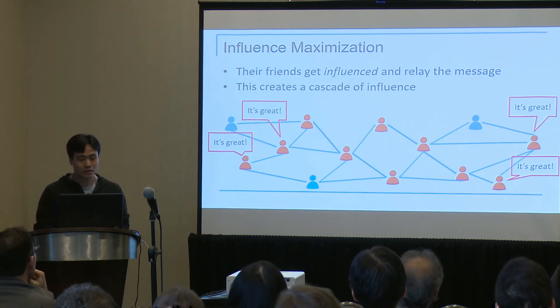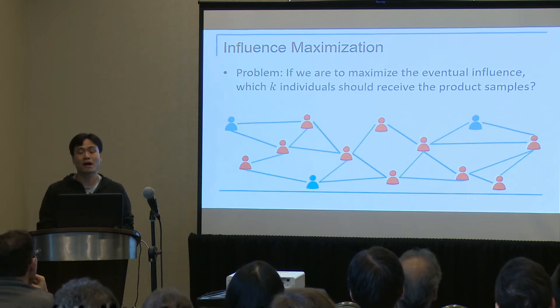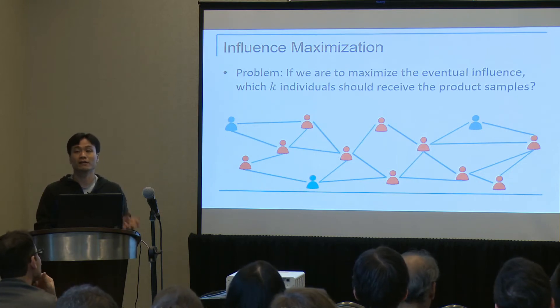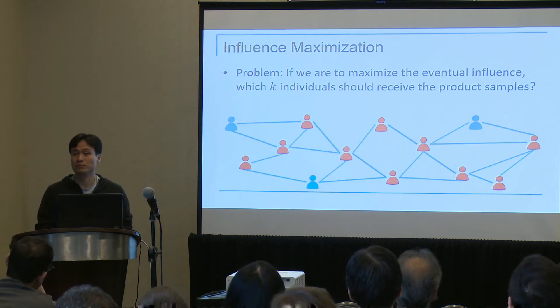So the question here is: if we are to maximize the number of individuals that are influenced by the end of this process, which K individuals should we choose in the beginning to distribute the product samples to?